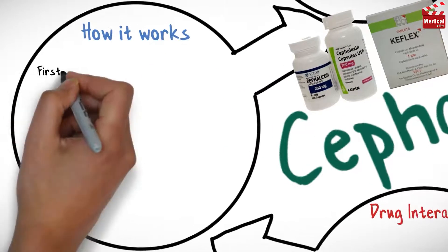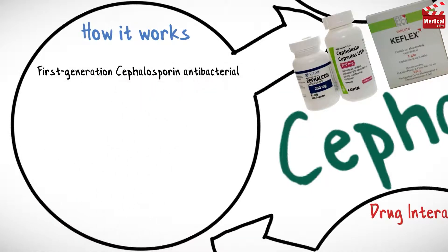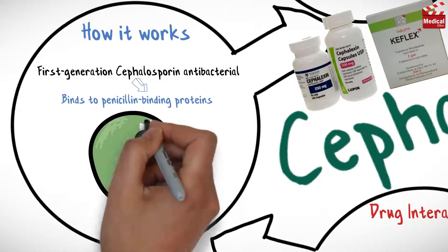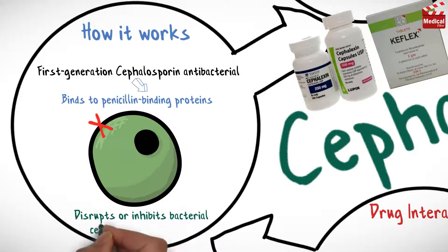Cephalexin is a first-generation cephalosporin antibacterial. It binds to penicillin-binding proteins and disrupts or inhibits bacterial cell wall synthesis.